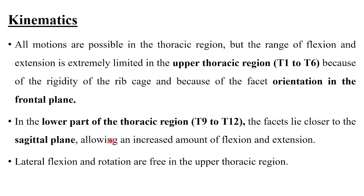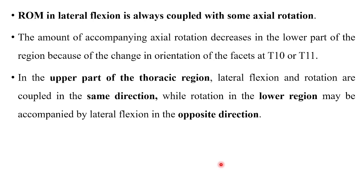In essence, the main motions in the thoracic region are lateral flexion and rotation because of the frontal plane orientation of the facets. Lateral flexion and rotation are free in the upper thoracic region. The range of motion in lateral flexion is always coupled with some axial rotation, and the amount of accompanying axial rotation decreases in the lower part of the region due to changes in facet orientation at T10 or T11.